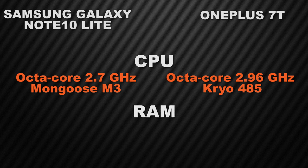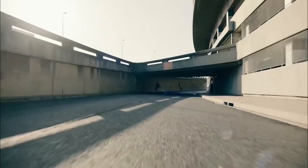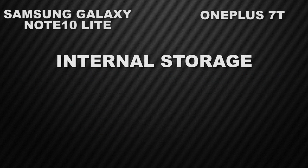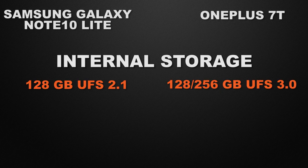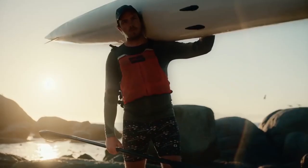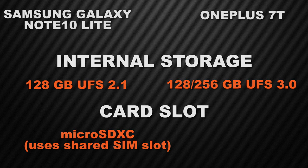Let's talk about RAM options. Samsung Galaxy Note 10 Lite comes with 6GB and 8GB options, while OnePlus 7T has only an 8GB option, so due to two RAM options Samsung Galaxy Note 10 Lite is the winner. For internal storage, Note 10 Lite comes with only 128GB, while OnePlus 7T has 128GB and 256GB options, so the winner is OnePlus 7T. Talking about external storage, Samsung Galaxy Note 10 Lite has MicroSD XC support but OnePlus 7T does not, so the winner is Note 10 Lite.